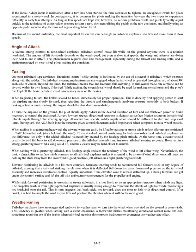Elevator positioning in tailwinds is a bit more complex. Standard teaching tends to recommend full forward stick in any degree of tailwind, arguing that a tailwind striking the elevator when deflected full down increases downward pressure on the tailwheel assembly and increases directional control. Equally important, if the elevator were to remain deflected up, a strong tailwind can get under the control surface and lift the tail with unfortunate consequences for the propeller and engine. While stick forward positioning is essential in strong tailwinds, it is not likely to be appropriate when winds are light. The propeller wash in even lightly powered airplanes is usually strong enough to overcome the effects of light tailwinds, producing a net headwind over the tail — suggesting that back stick does the most to help with directional control. If in doubt, it is best to sample the wind as you taxi and position the elevator where it will do the most good.